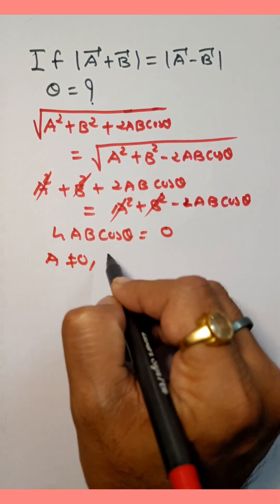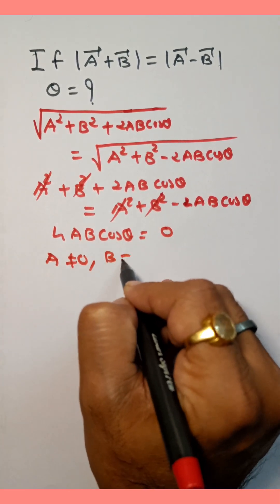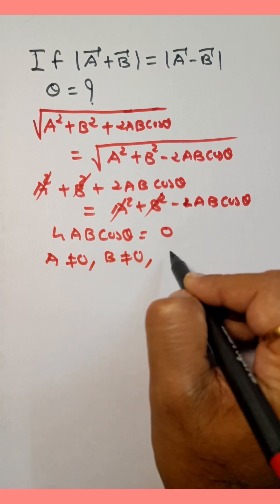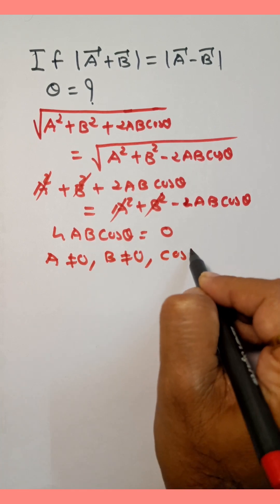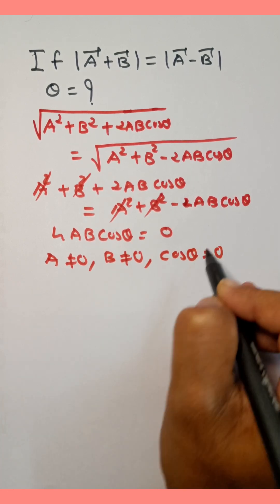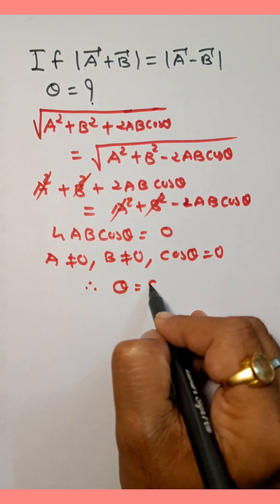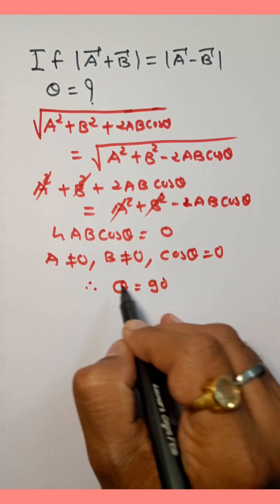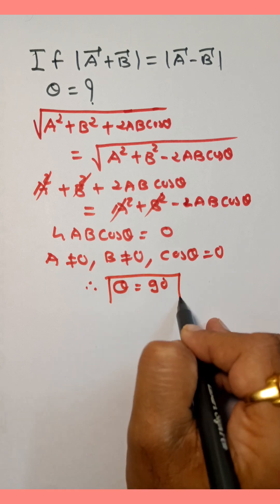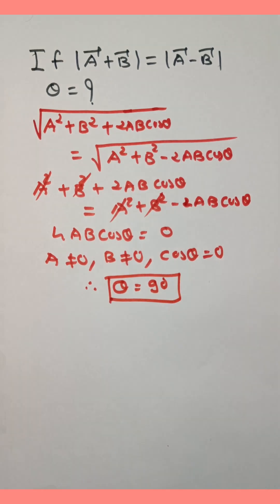Since a ≠ 0 and b ≠ 0, we have cosθ = 0, which means θ = 90°. So the angle between vectors a and b is 90°. Thank you.